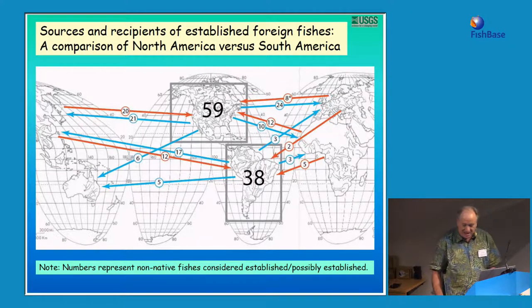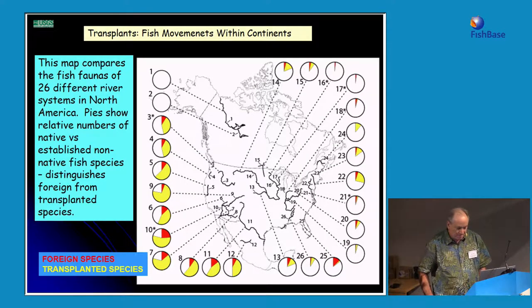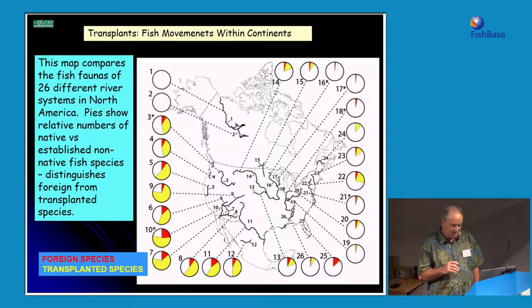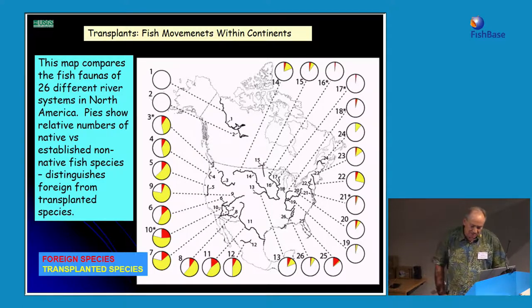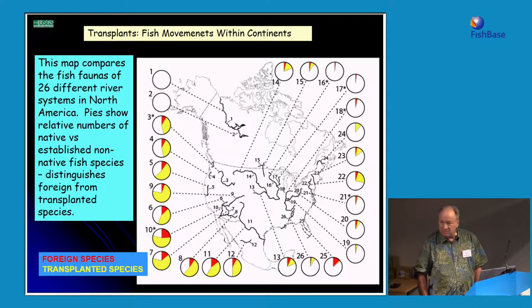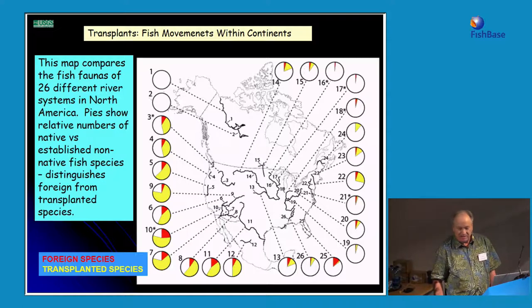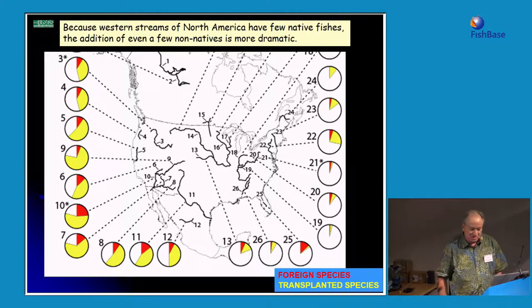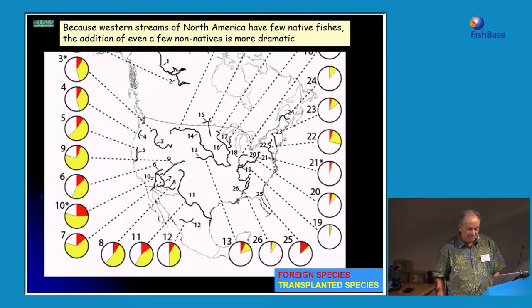This map provides information on the relative numbers of native, foreign, and transplanted fishes among 26 river drainages in North America. White represents native species, red represents foreign species, and yellow represents species transplanted from other areas of North America. Western streams have relatively few native fishes compared to the east; consequently, even a few non-natives in western U.S. streams is fairly dramatic, with transplants commonly outnumbering native species — in some cases by more than 3 to 1.